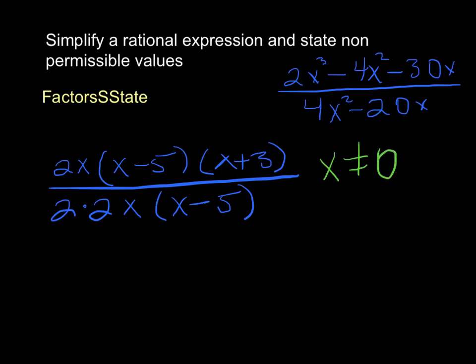And also, we need to look at what's in this factor right here, x minus 5. Well, if we put a 5 in here, that's going to make this factor 0, and then everything in the denominator is going to be 0. So x cannot equal 5.